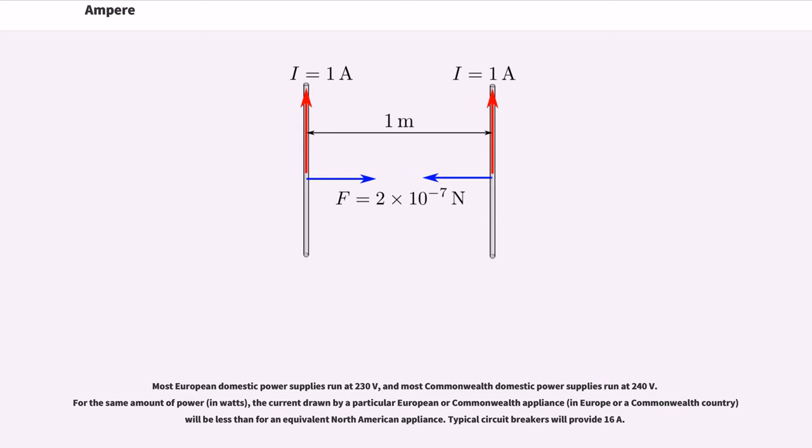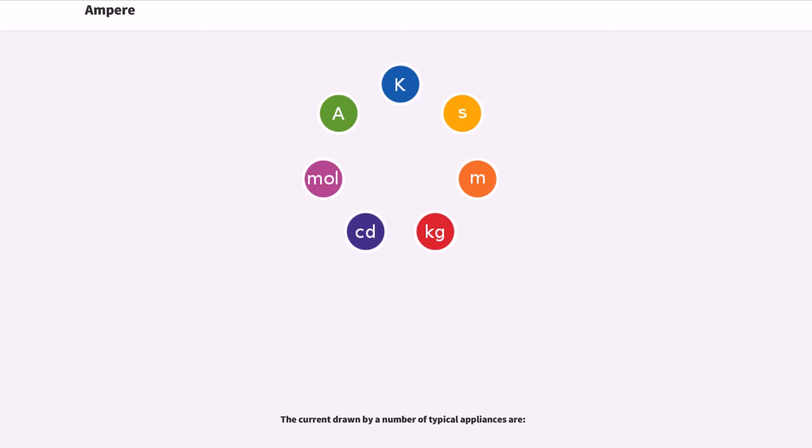Most European domestic power supplies run at 230V, and most Commonwealth domestic power supplies run at 240V. For the same amount of power in watts, the current drawn by a particular European or Commonwealth appliance in Europe or a Commonwealth country will be less than for an equivalent North American appliance. Typical circuit breakers will provide 16A. The current drawn by a number of typical appliances are [examples].